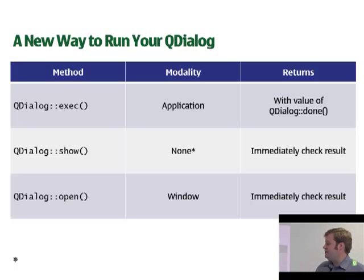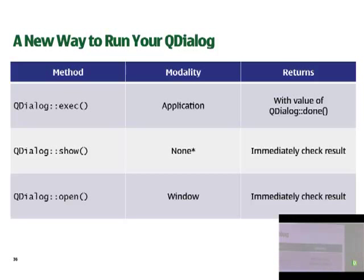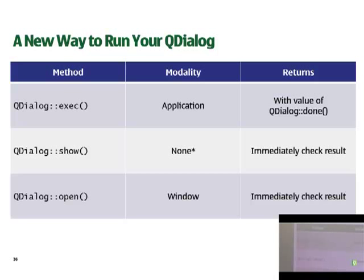Sometimes you might just want to run a sheet, fire it off and forget, and just get the result later. What we've done is create a new function called QDialog::open. This is window-modal by default and will return immediately. When you use QDialog::open, you connect to the signals emitted from the dialog and do the rest of your processing later.